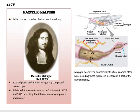In 1675, an Italian doctor named Marcello Malpighi published his book Anatomia Plantarum, describing the internal anatomy of plants and animals. There are several structures named after him in your body, including part of your kidney.